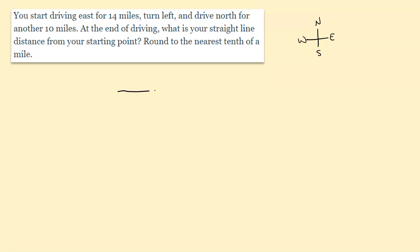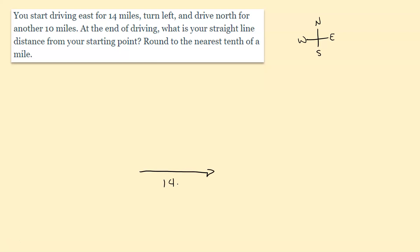So if we're driving east for 14 miles, it would look something like this, and then turn left. Let's pull this down here. And then we turn left, drive that direction for 10 miles, so now we're going north. What is the straight line distance from your starting point? So we're starting here, ending here, so the straight line would be like this. So this is our right triangle here.